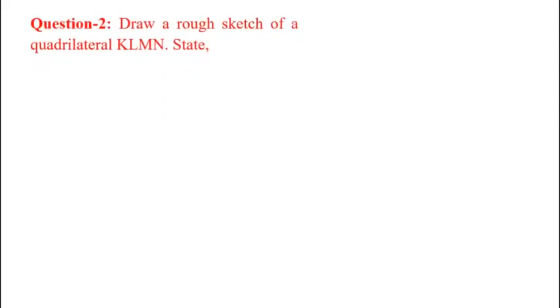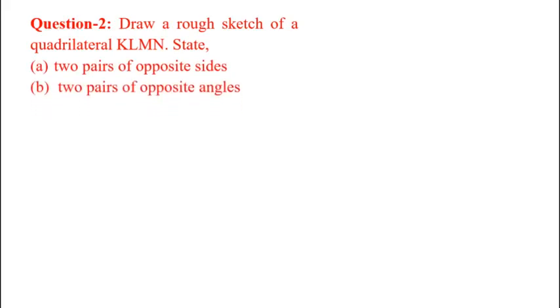Question number 2. Draw a rough sketch of a quadrilateral KLMN. State two pairs of opposite sides, two pairs of opposite angles, two pairs of adjacent sides, and two pairs of adjacent angles.